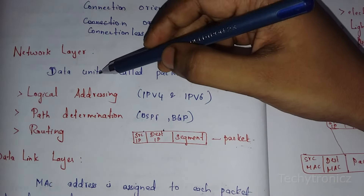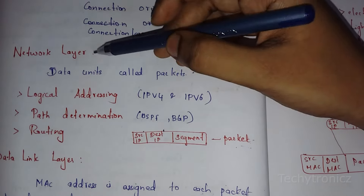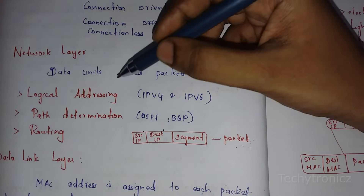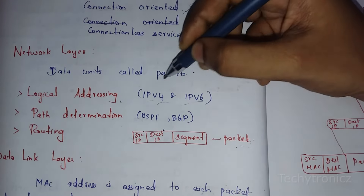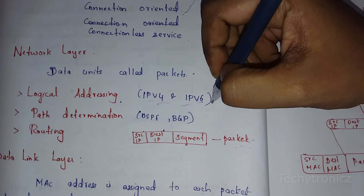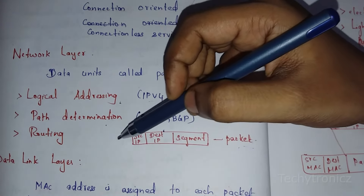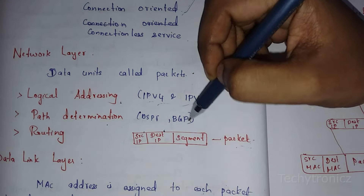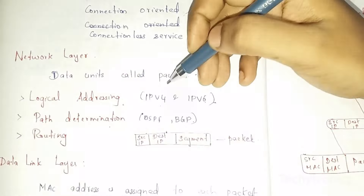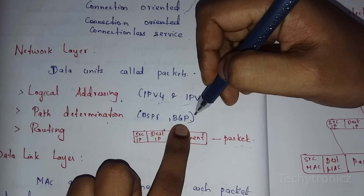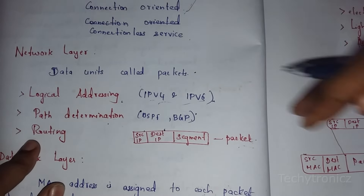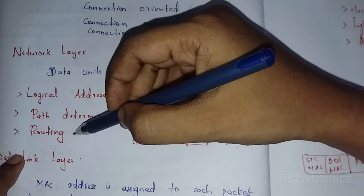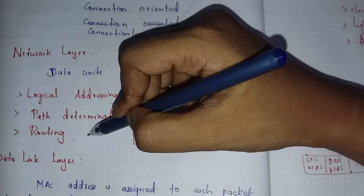The next is the network layer. In the network layer, the data units are called packets. The functions are logical addressing, path determination, and routing. Logical addressing uses IP addresses — IPv4 and IPv6. Path determination finds the shortest path through the network using protocols like OSPF (Open Shortest Path First) and Border Gateway Protocol. Routing is used to communicate between computers on different networks.